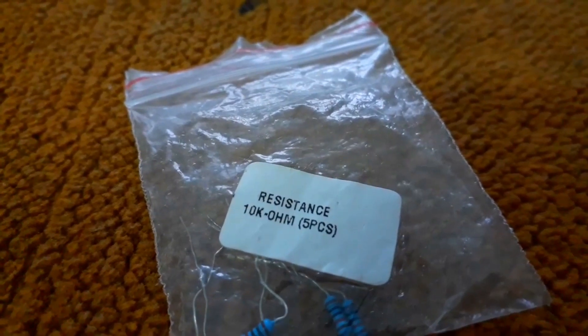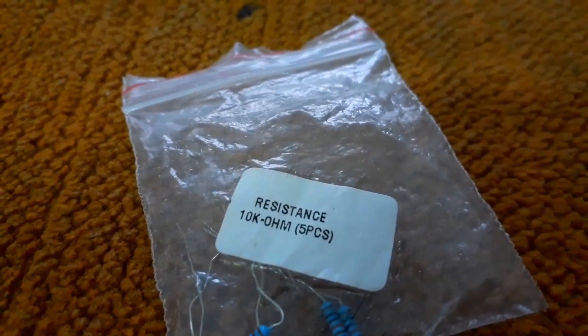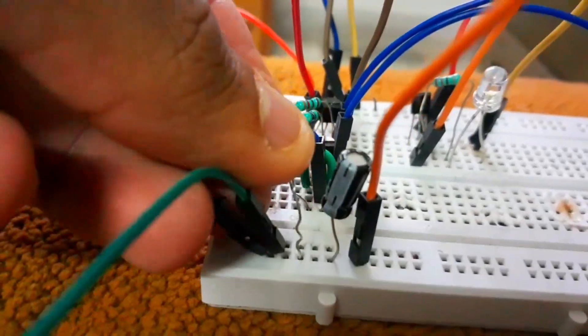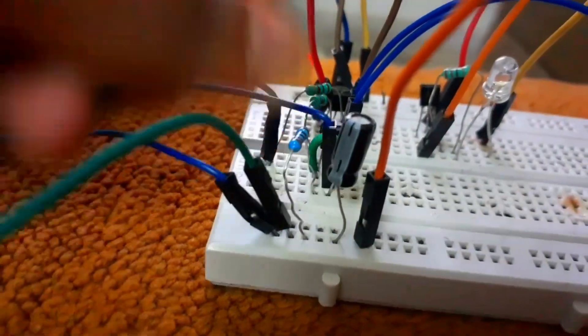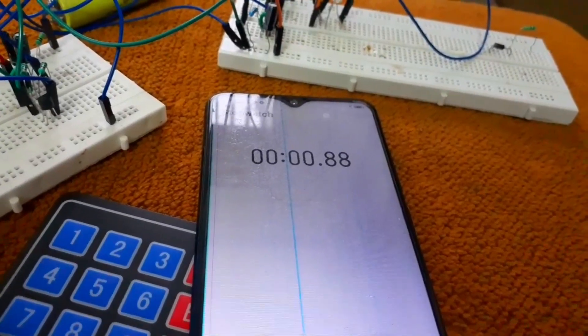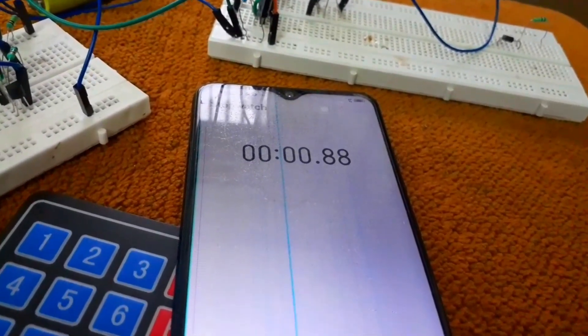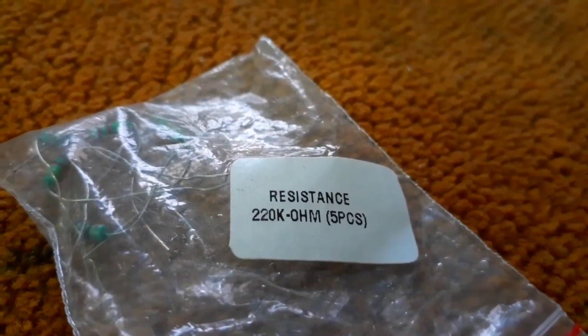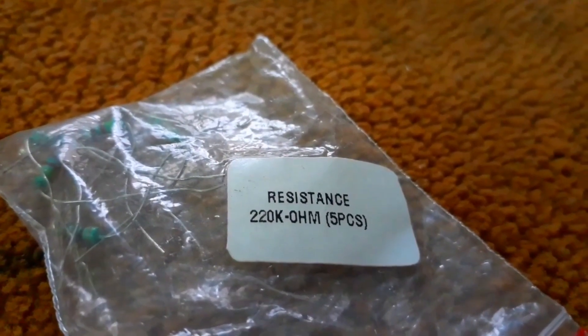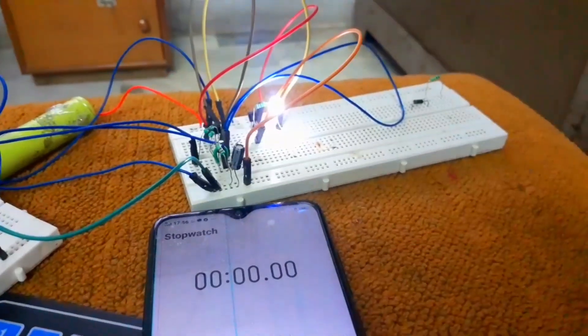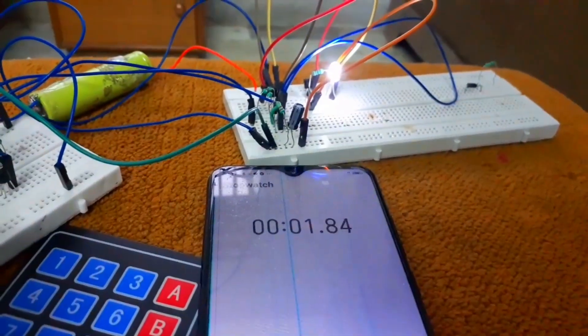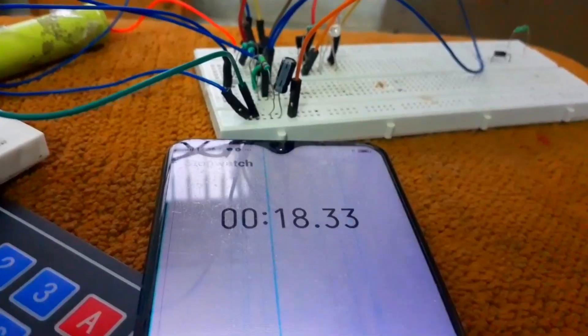Now if we put a discharging resistor of 10 kOhm instead of 100 kOhm, the capacitor almost discharges in less than a minute because the value of discharging resistor is quite low. Finally, if we put a discharging resistor of 220 kOhm, the time period until which the base of transistor remains ON rises to about 20 seconds.